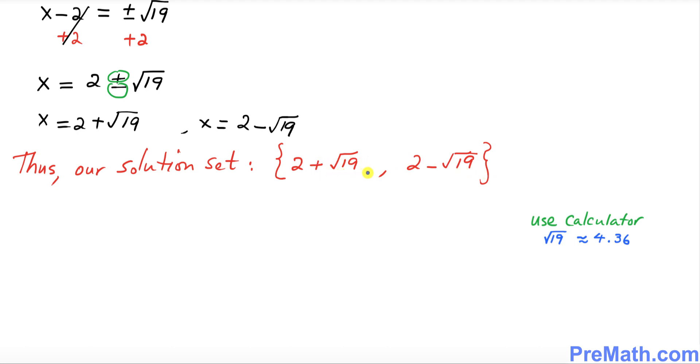If we plug it in, our solution set in terms of decimal is going to be one of the solution is 6.36, approximately equal to, the other solution is approximately equal to -2.36. Thanks for watching and please subscribe to my channel for more exciting videos.